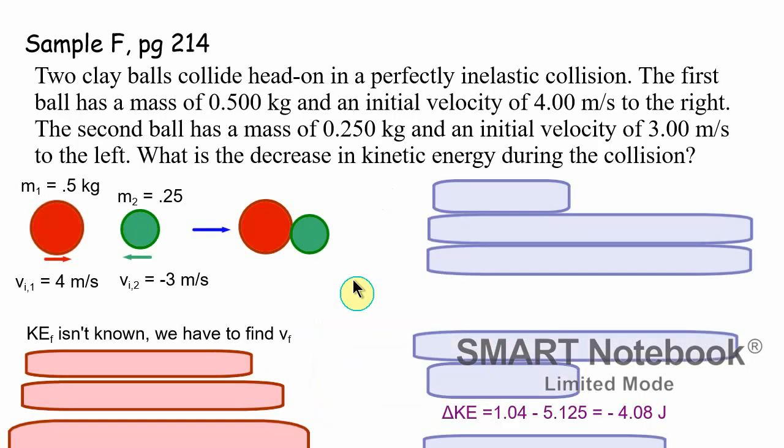Page 214. Different type of question, but it's really the same basic thing. This time we're looking at kinetic energy. So we have two clay balls, which I have done red and green. The mass of the red ball is a half a kilogram. The mass of the green ball is a quarter of a kilogram. The red ball is going to the right at four meters per second. The green ball is going to the left at three meters per second. So they're heading towards each other. They're going to collide. It says in an inelastic collision. And what we want to know is a decrease in kinetic energy during the collision. That sounds kind of vague, but we got to find some stuff out.